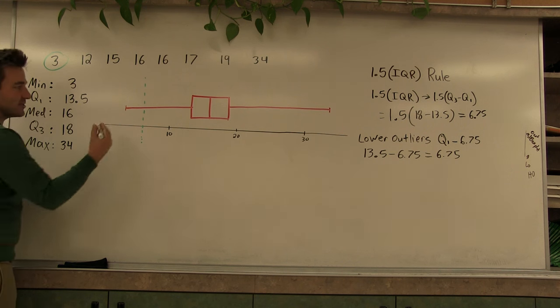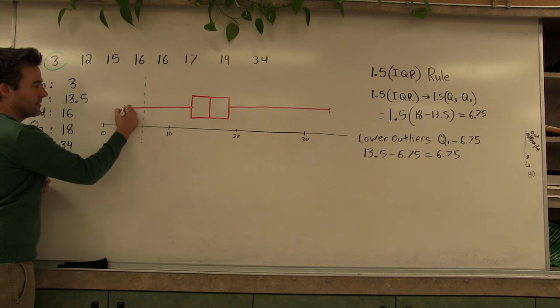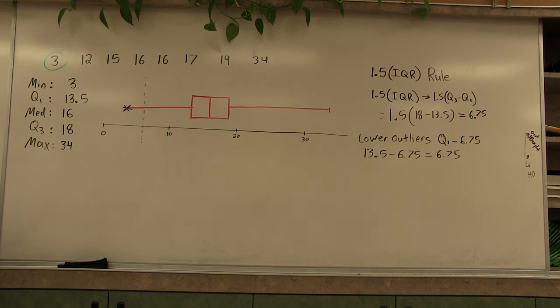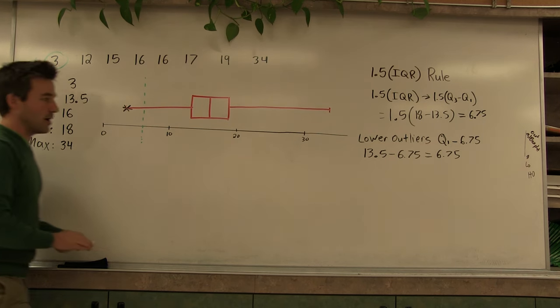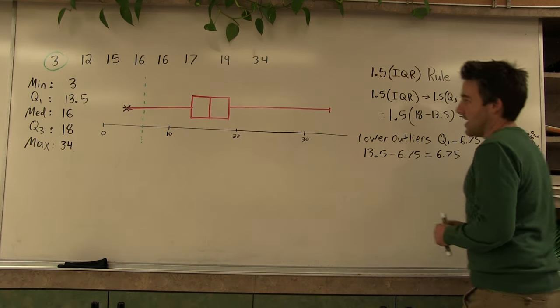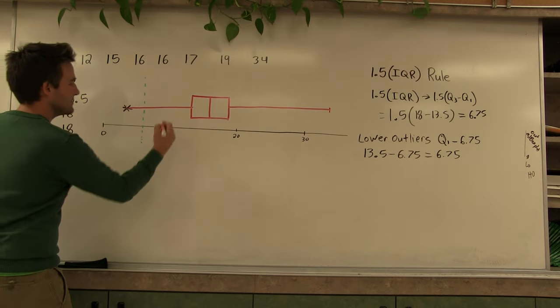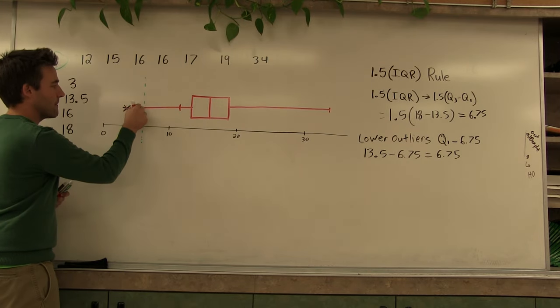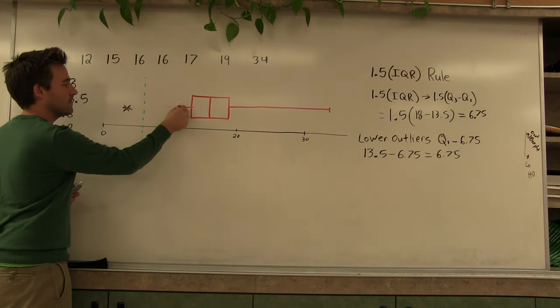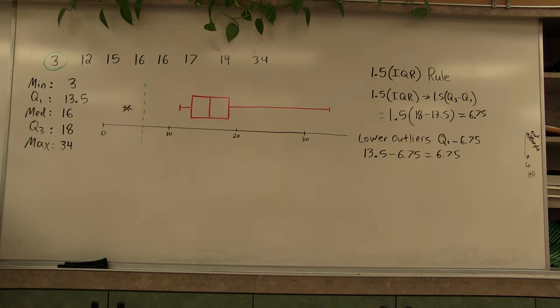Replace the outlier with an asterisk. So the 3 is now an asterisk. And our lowest value that's not an outlier is 12, so that's going to become our new end of our whisker. What we've done is just modified the box plot.